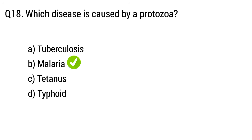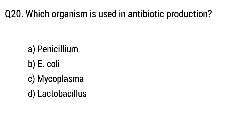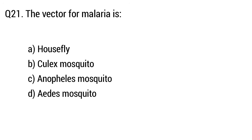Question 19: Who discovered penicillin? The right answer is option A, Alexander Fleming. Question 20: Which organism is used in antibiotic production? The right answer is option A, Penicillin.